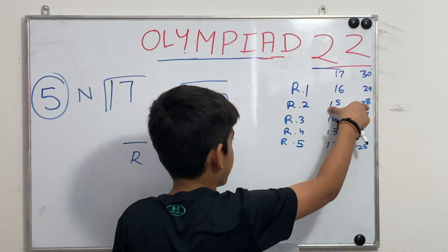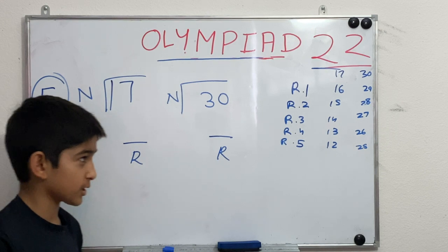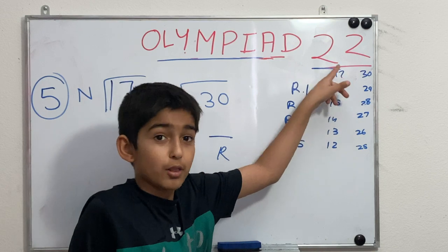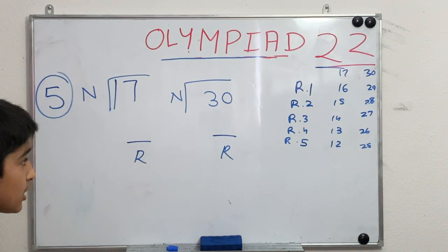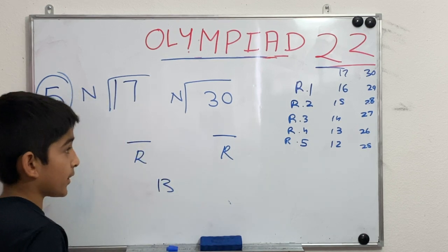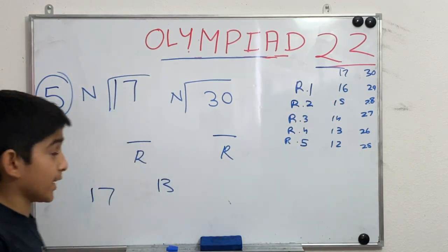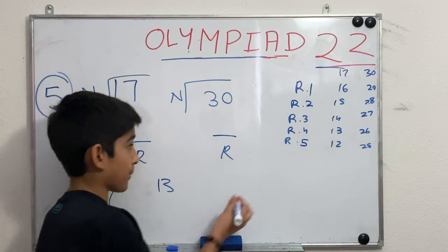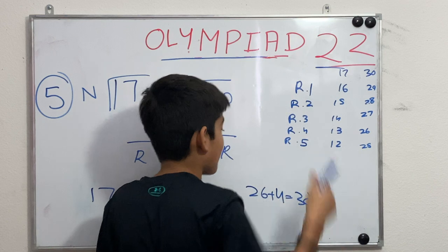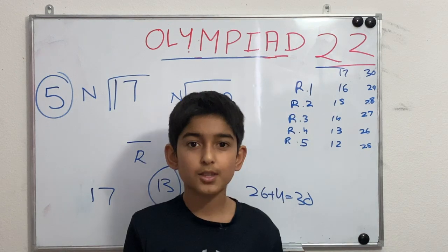Checking pairs: 29 and 16 — no. 28 and 15 — no. 27 and 14 — no. 26 and 13 — yes, 13 divides both. Now, n can't be 26 because 26 is greater than 17. Checking n equals 13: 13 plus 4 equals 17, and 13 times 2 plus 4 equals 30. Both check out, so 13 is the greatest possible value of n.